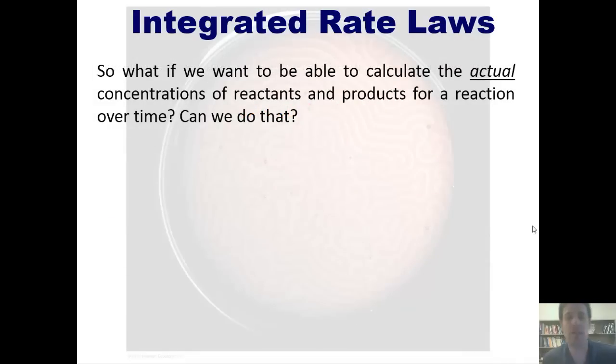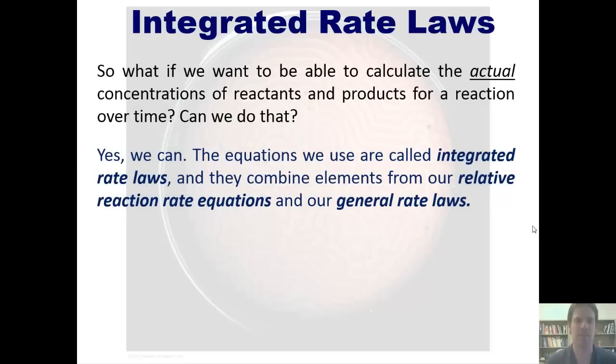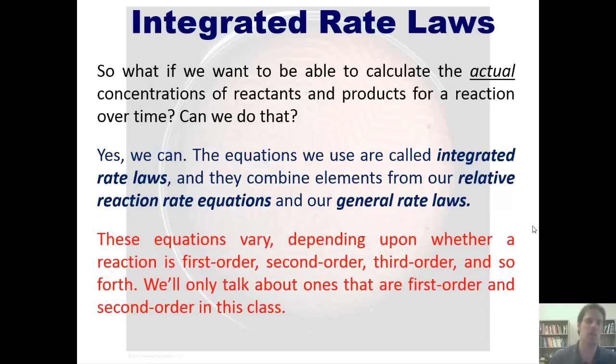So what if we want to be able to calculate the actual concentrations of reactants and products for a reaction over time? Can we do that? The answer is yes we can. The equations we use are called integrated rate laws, and they combine elements from our relative reaction rate equations and general rate laws. These equations vary depending upon whether your reaction is first order, second order, third order, and so on. We'll talk only about ones that are first order and second order in this class. So for ones that are beyond that, well, you'll have to learn it somewhere else, I guess.